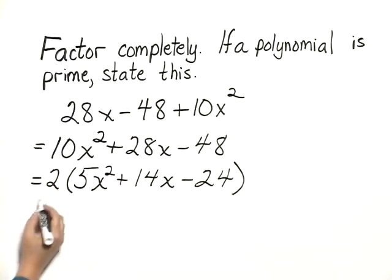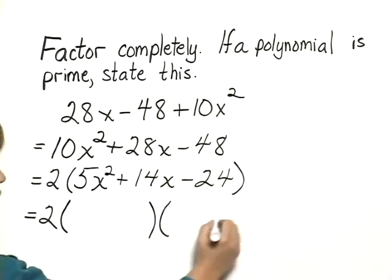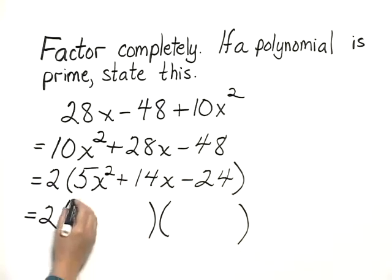Now we have to keep carrying the 2 with us, but we want to concentrate on the trinomial that's inside the parentheses. If that factors, that factors into 2 binomials. The product of the first terms will be 5x squared. The only way we're going to get that is with 5x and x.